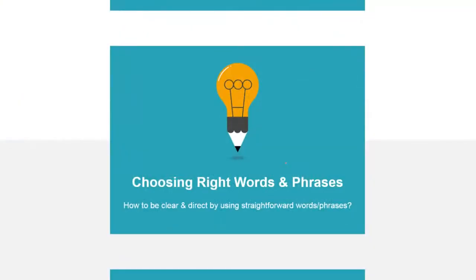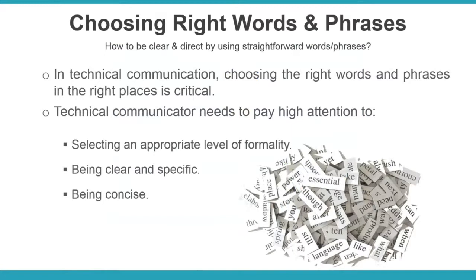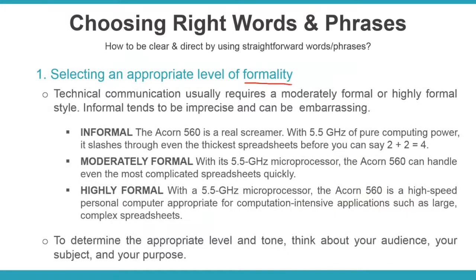Now part two: choosing the right words and phrases. It depends on formality, and you must be precise, clear, and specific. An informal example: 'The Acon 560 is a real screamer with 5.5 gigahertz of pure computing power — it zips through even the thickest spreadsheets before you can say 2 plus 2 equals 4.' This is informal because it doesn't identify what the Acon 560 is, and phrases like 'thickest spreadsheet' and 'before you can say 2+2' are vague and casual.